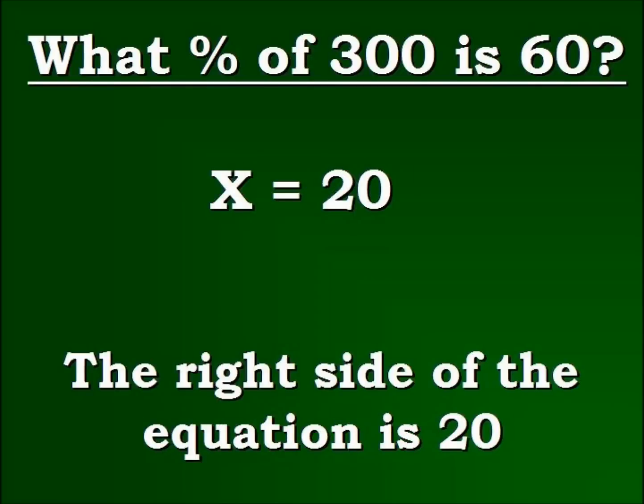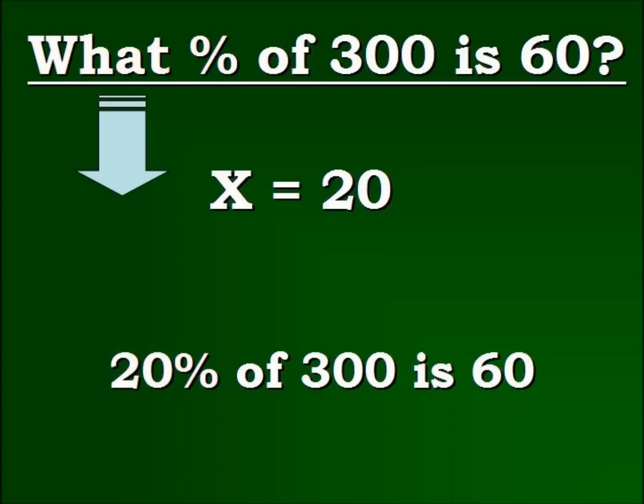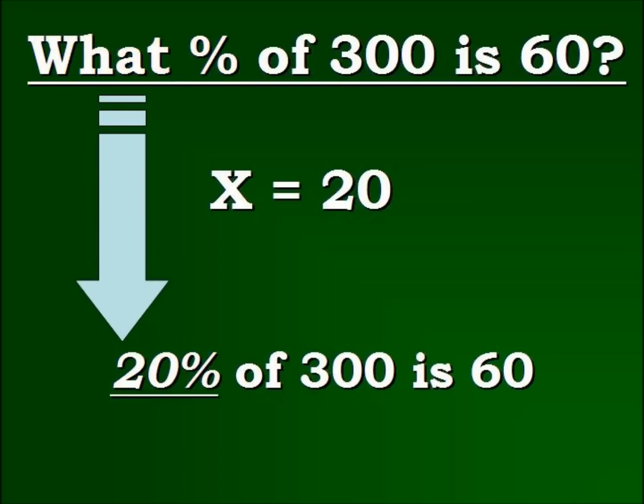Now, we have our final answer. We've got an X by itself, and we've simplified the other side. So, now the equation is balanced, and we have our solution. 20% is our solution. We go back and look at our original problem, because we were looking for a percent. What percent of 300 is 60? So, now we know 20% of 300 is 60.